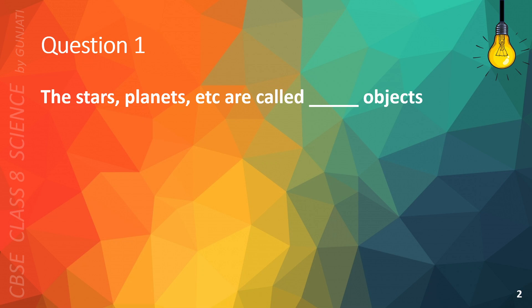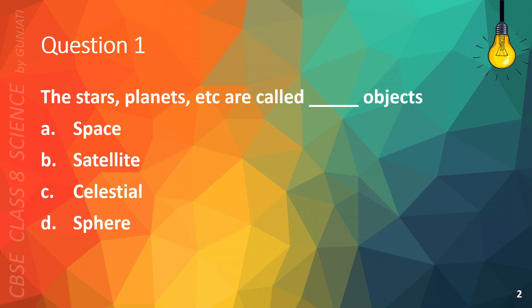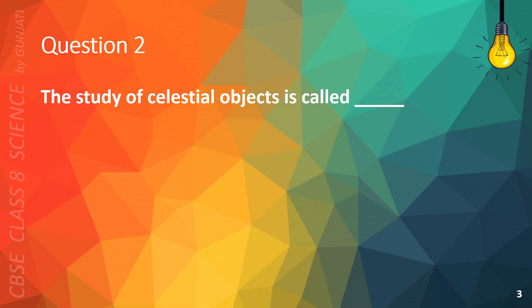Question 1. The stars, planets, etc. are called blank objects. A. Space, B. Satellite, C. Celestial, or D. Sphere. The correct answer is C. Celestial.